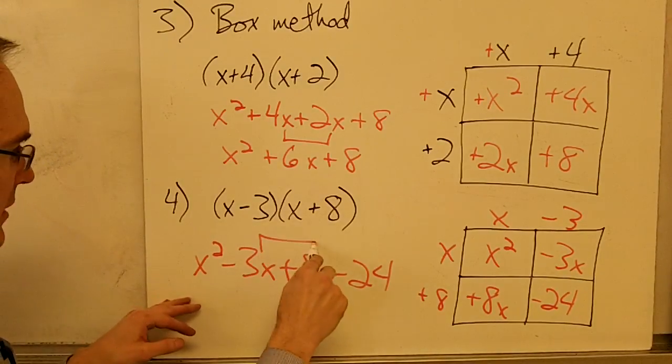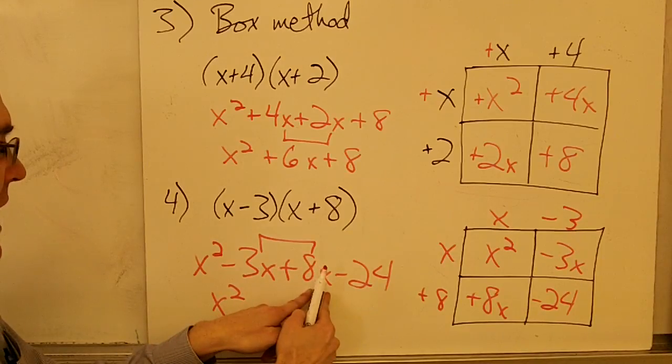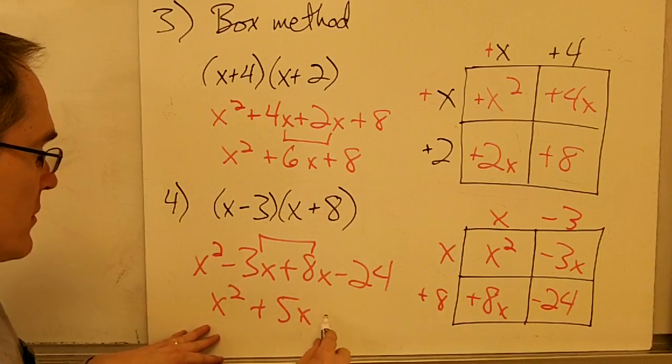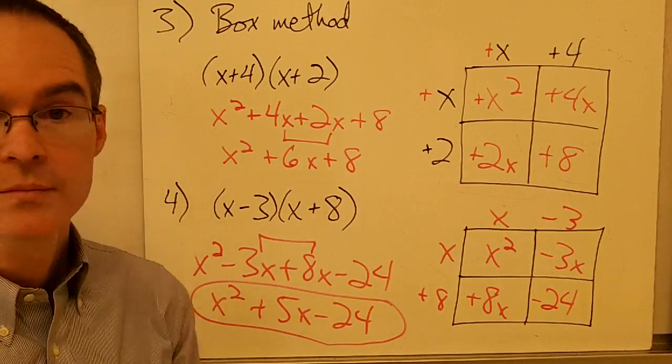And I just write down my terms here. x squared minus 3x plus 8x minus 24. And I collect up my like terms. So I've got minus 3x and positive 8x, so that's going to give me positive 5x minus 24. And I'm done.